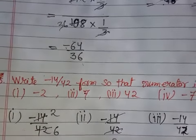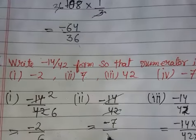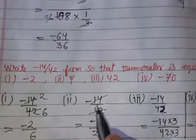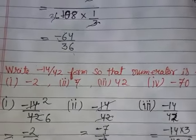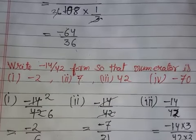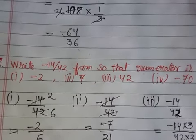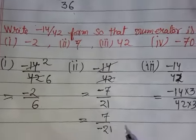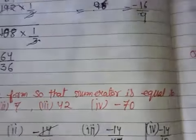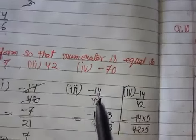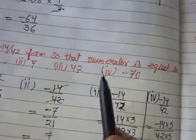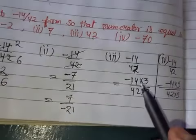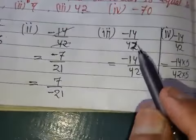Similarly, to convert the numerator to 7, we multiply by the appropriate factor. 2 times 7 gives 21, so we write 7 in the numerator with -21 as the denominator. Now for question 3, the numerator must equal 42, so we multiply accordingly.